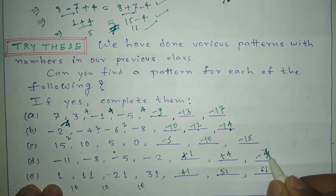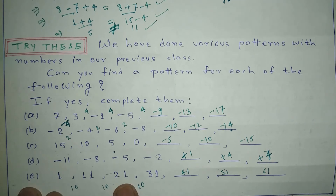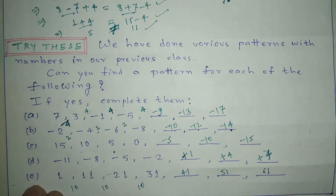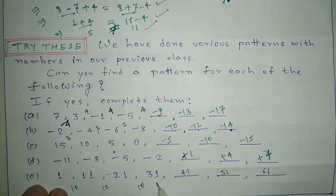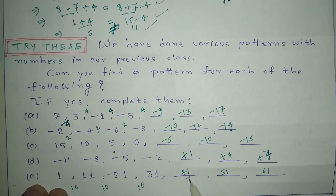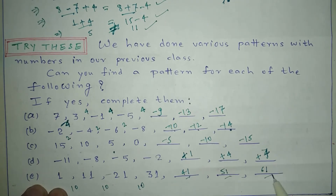In the last pattern question, the series is 1, 11, 21, 31. Here, 10 is being added continuously. According to this pattern, the next terms are 41, 51, and 61.